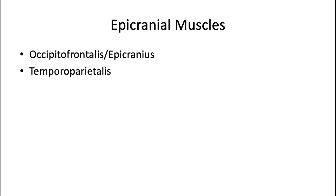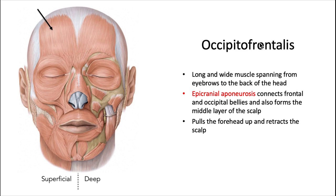Let's start with the two epicranial muscles. The occipitofrontalis, also known as the epicranius muscle, is a long and wide muscle spanning from the eyebrows all the way to the back of the head. The epicranial aponeurosis connects the frontal and occipital bellies of this muscle and forms the middle layer of the scalp. One way to remember this: the five layers of the scalp are skin, connective tissue, aponeurosis, loose connective tissue, and periosteum — each letter corresponding to the word SCALP. This muscle pulls the forehead up and retracts the scalp.